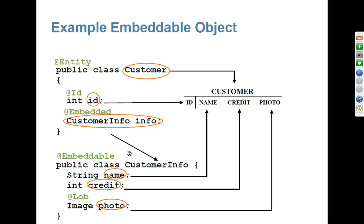Let's see an example. We have a Customer class which is the parent, and it wants to include the fields of the CustomerInfo class. CustomerInfo is not its own entity — it doesn't have the @Entity annotation. What we want to do is include all the fields of CustomerInfo into the Customer entity. So CustomerInfo should be annotated with @Embeddable, and in the Customer class you use the @Embedded annotation. The generated table will be the customer table, including all fields: id from Customer, and name, credit, and photo from the CustomerInfo embeddable class.